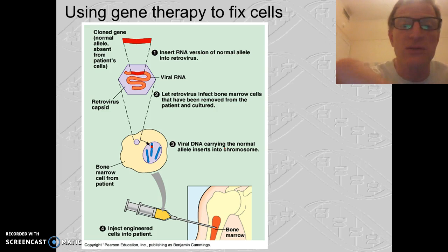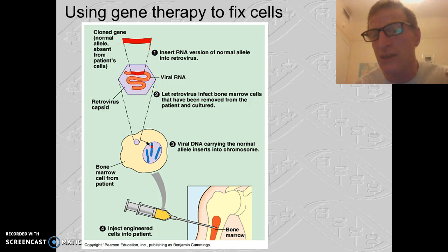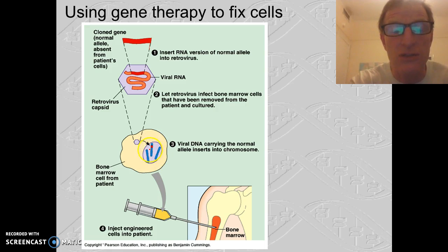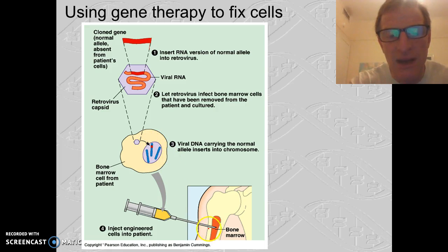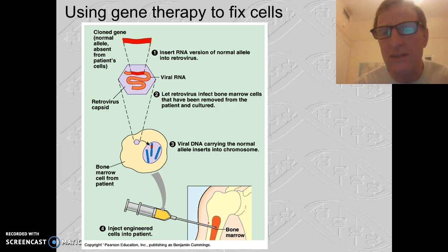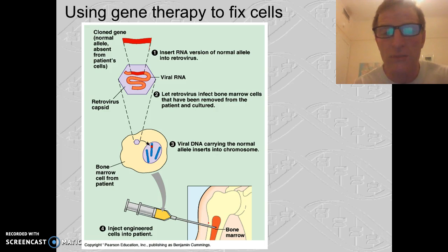Here's another example: we can cut genes out with restriction enzymes and insert them into viruses. Viruses usually attack your cells and insert their viral DNA, but we can modify these viruses so they attack certain cells and insert genes those cells need. For instance, if bone marrow isn't producing certain white blood cells because of a missing gene, we can insert that gene. This is gene therapy, and while we haven't had too much success yet, there is hope for it in the future.